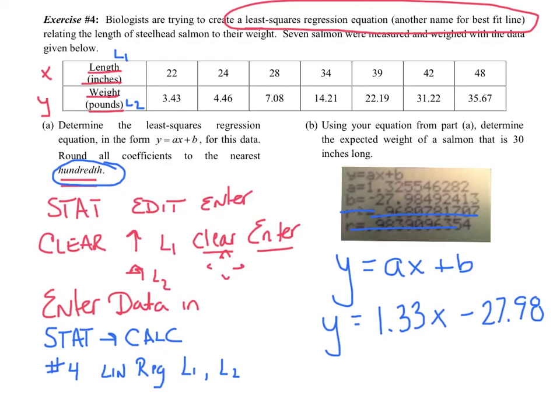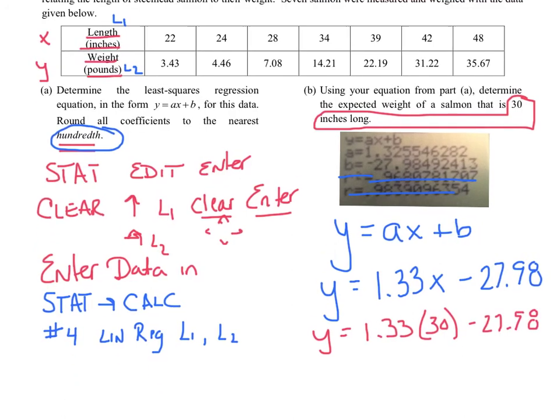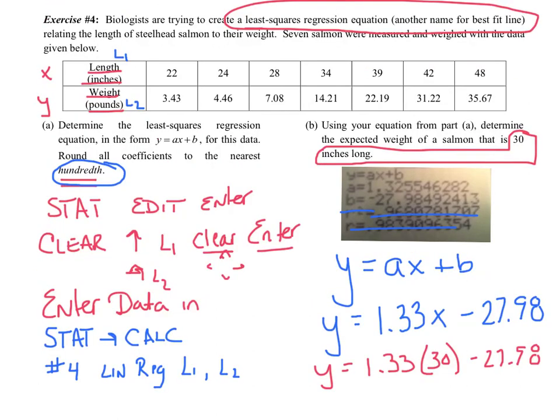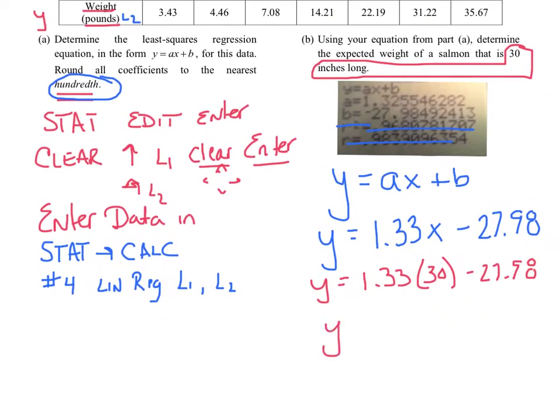Part B, using your equation from part A, determine the expected weight of a salmon that is 30 inches long. So, just pay attention to the units, 30 inches long. If they give you inches, are they giving you the X value or the Y value? Which one is measured in inches? Clearly, the X. So, I'm going to plug 30 into the letter X. 1.33, use parentheses, minus 27.98. And type it in exactly how you see it, all on the same line, parentheses and all. So, I get, whoopsie, Y equals 11.92 pounds.